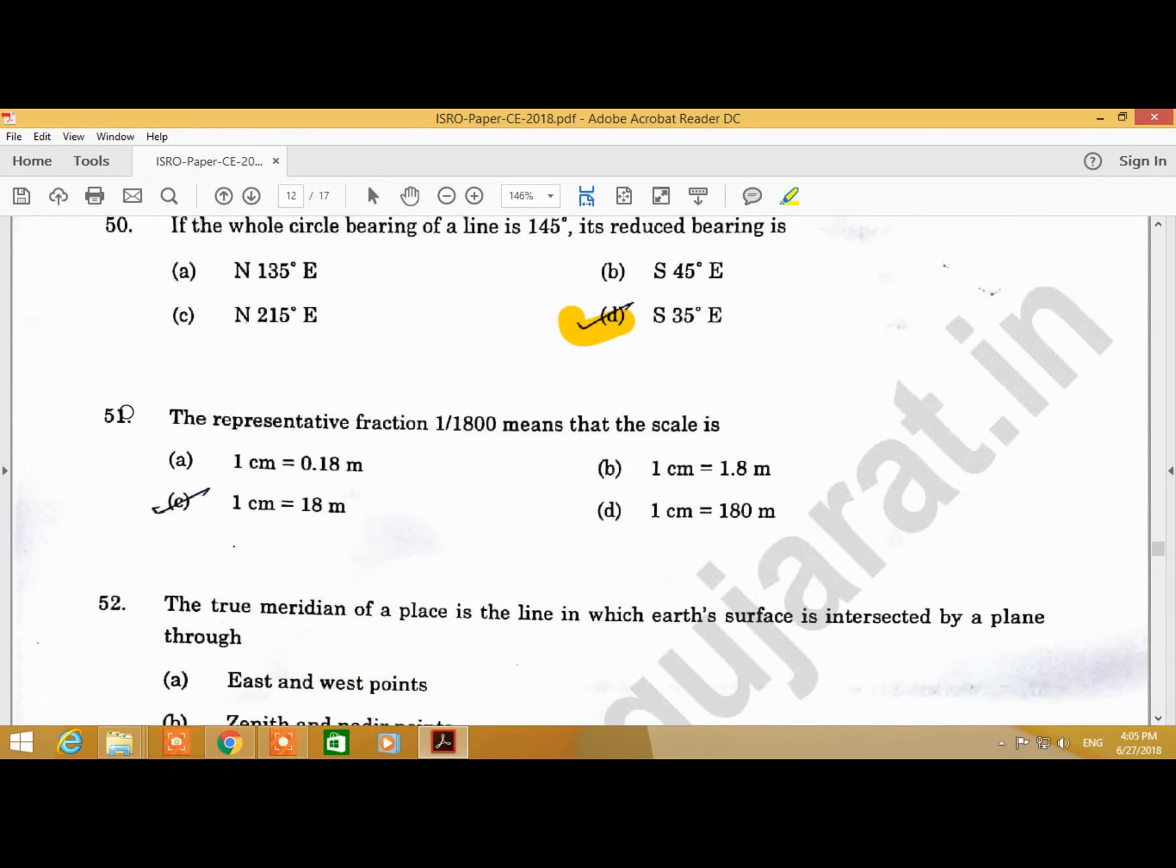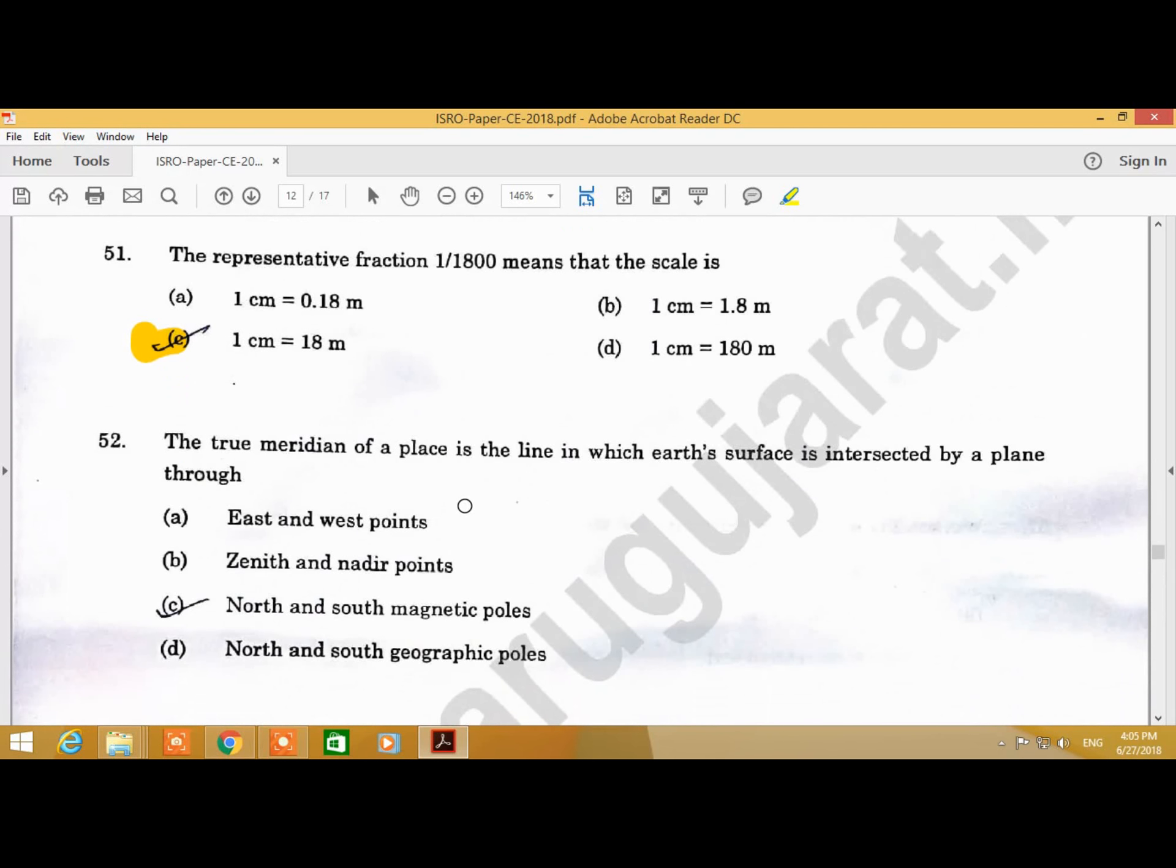Question Number 51: The representative fraction of 1 upon 1800 means that the scale is, answer is C, 1 centimeter is equal to 18 meters.